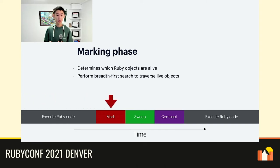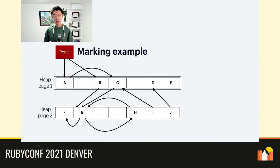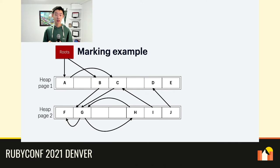Marking is the phase where we determine which Ruby objects are alive and which ones can be freed. We first mark the roots, which include things like global variables, classes, modules, and constants. We then perform breadth-first search to traverse the network of live objects. Here's a toy example of a heap with two pages with seven slots on each page. We have a total of 10 objects labeled A through J, with arrows indicating references. For example, the arrow from object J to object D means that J holds a reference to D. The first step of marking requires us to mark the root objects, which here are objects A and B.